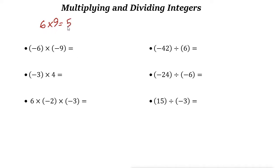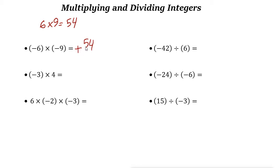Now if both are negative, the first rule for multiplying integers is: negative times negative is positive. So negative six times negative nine — both are negative, negative times negative is positive — so the answer is positive 54.